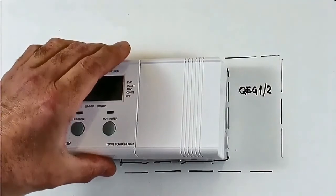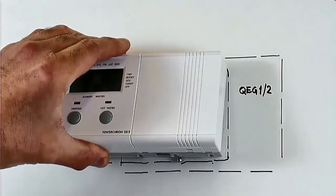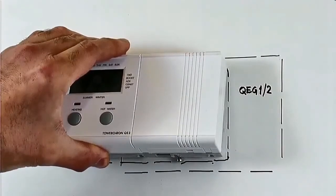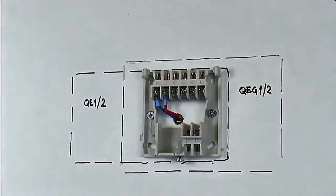This will release the mechanical connection on the underside and you can lift off the QE2 rotating from the lower edge, pivoting on the top edge, then lift the programmer away from the backplate.